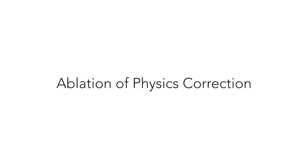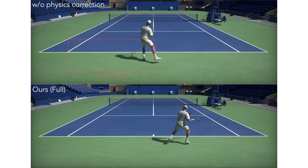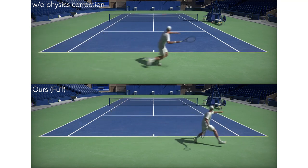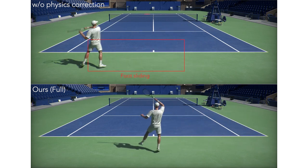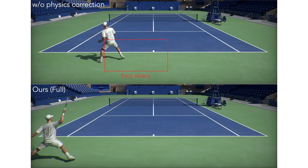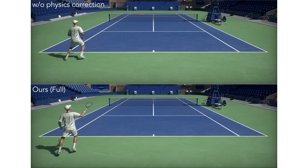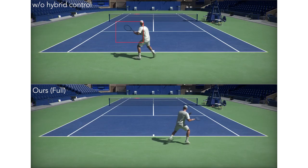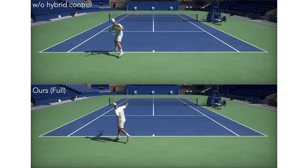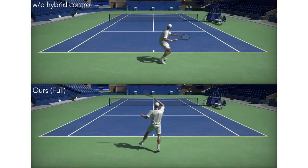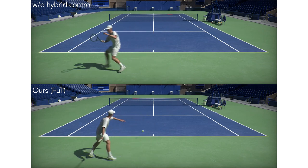The physics correction is essential for constructing a good motion embedding for generating natural tennis motions. Directly training the embedding from the uncorrected kinematic motions will result in physically implausible motion that exhibits artifacts such as foot skating and jittering. It also decreases precision when hitting the tennis balls. The proposed hybrid control is crucial for precisely controlling the tennis racket. Without the hybrid control to correct the wrist motions, the simulated character may hit the ball but fail to return it close to the target.